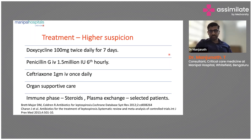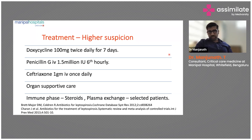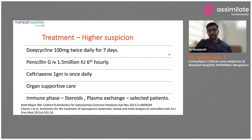In the immune phase, I have seen two or three patients who develop pulmonary hemorrhage with leptospirosis — these patients require plasma exchange and steroids. It's a double-edged sword: giving steroids while also treating the infection with doxycycline. The immune phase must be dealt with cleverly, tackling both the infection and the immunosuppression carefully.